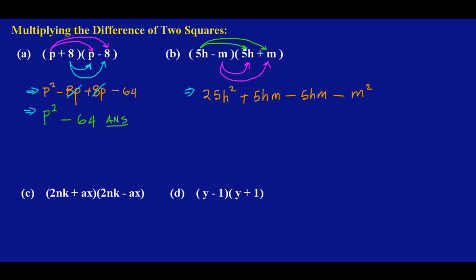Beautiful. Now if you notice what's happening here, I have like terms to calculate. So I can see 5hm minus 5hm, these two will cancel out. They are like terms.